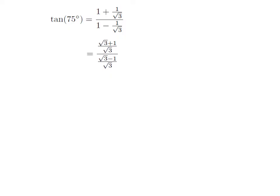So, tan(75°) is equal to 1 plus 1/√3. Looking at the numerator expression, √3 will be in the denominator, so in the numerator it becomes 1×√3 plus 1, which is equal to √3 + 1. Similarly, in the denominator it is √3 minus 1 divided by √3. After further simplification, the expression becomes (√3 + 1) divided by (√3 − 1).